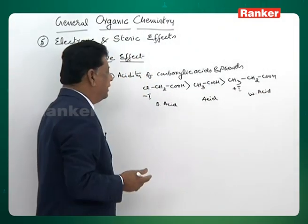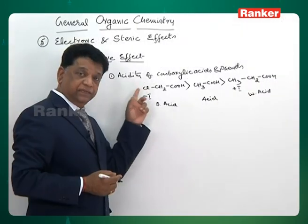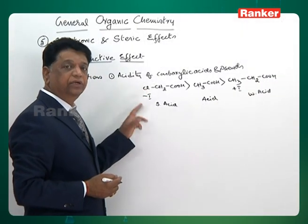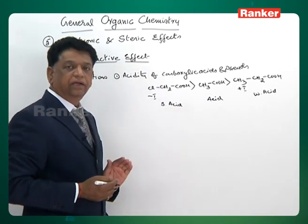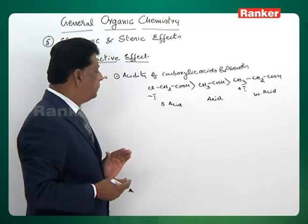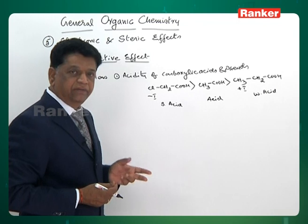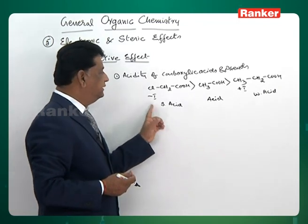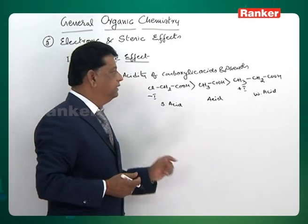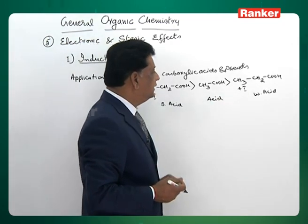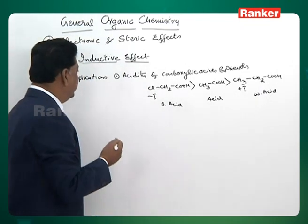As the plus-I groups increase — either by the nature of the group, such as fluorine making it much more acidic, or by number of chlorines closer to the COOH group — the electronegativity of the element, number of groups, and position all influence acidity. As minus-I increases, acid strength increases; as plus-I increases, strength decreases.